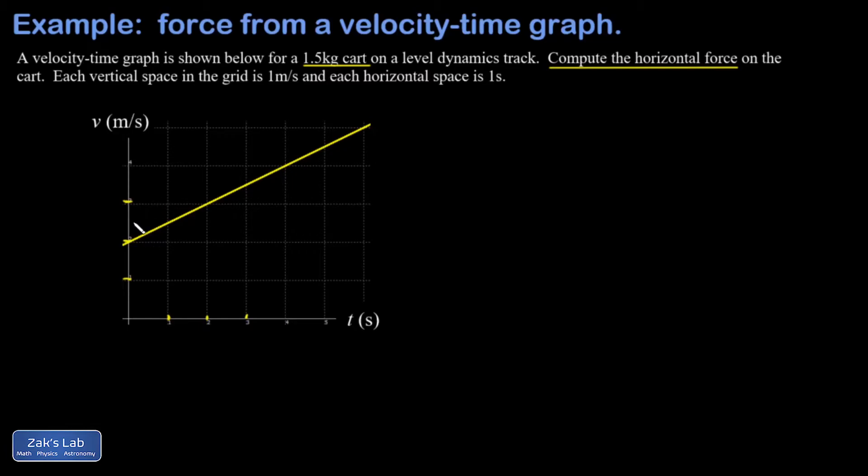So to get the slope on this velocity-time graph I can compare any two points where the values of v and t are clear. At our starting point I have t equals zero, v equals two, and all the way at this finishing point I have t equals six, v equals five.